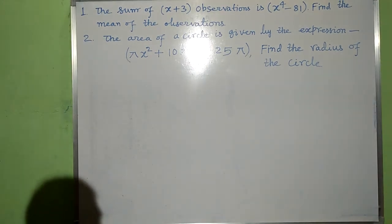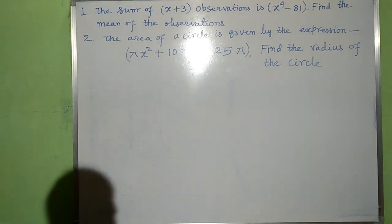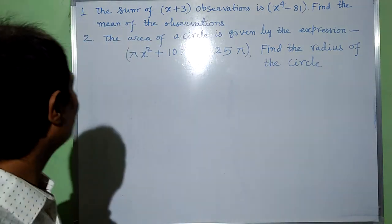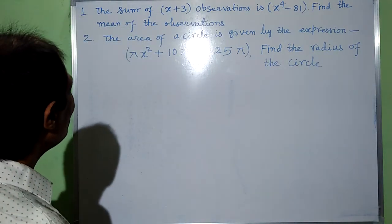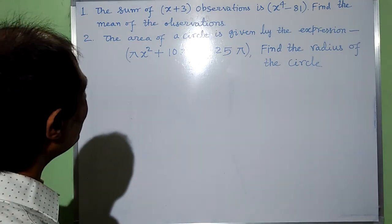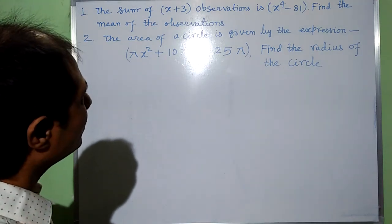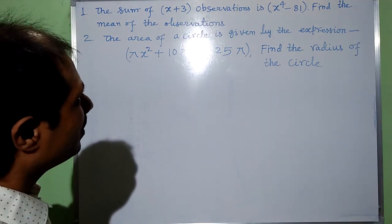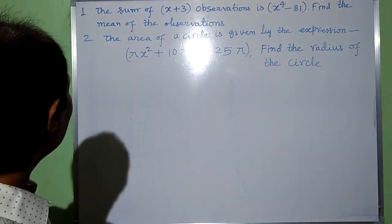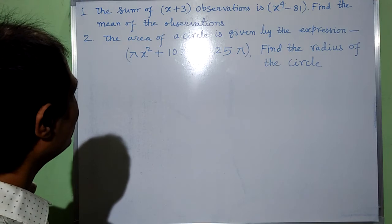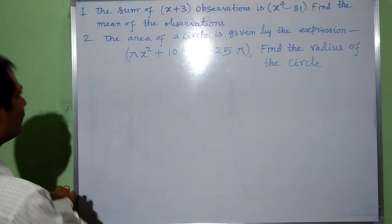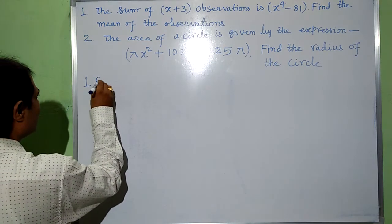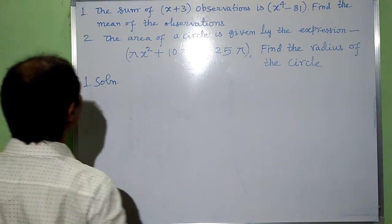Namaste everyone. Here I am going to solve some questions related to statistics. The sum of x plus 3 observations is x to the power 4 minus 81. Find the mean of the observations.